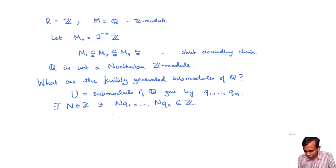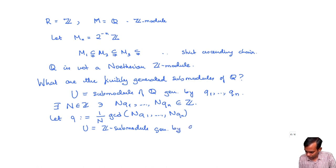Now, you take the GCD of these integers, that's going to be an integer and divide by N and call that Q. So let Q be 1 over N times the GCD of NQ1, NQ2 up to NQ_n. Then I leave it as an exercise to you to show that U is just the Z submodule generated by Q, i.e., U is just Z times Q, all the integer multiples of Q. So every finitely generated Z submodule of Q is just generated by one element.